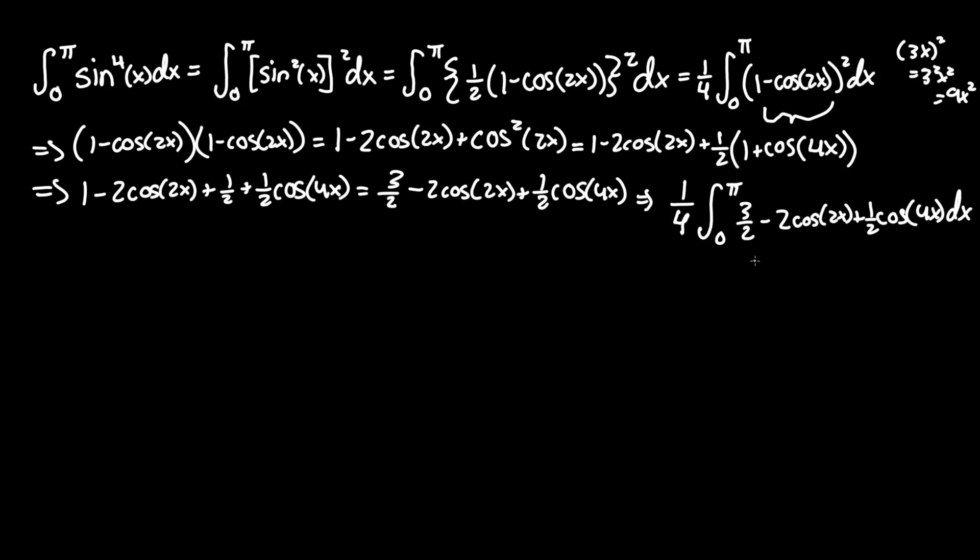And as you can see, every term here is able to be integrated. So let's finally do that. Keeping the one fourth out as a constant. We have the integral of three halves, which is just 3x over 2, minus the 2 that's in the front, over the coefficient of what's inside the trig function, since that's what you have to do when you integrate one, times sine of 2x, plus using the same logic, one half, times one fourth, sine of 4x, between the boundaries of zero and pi.